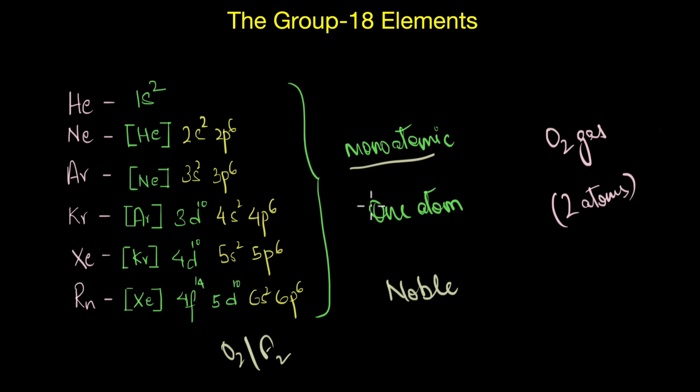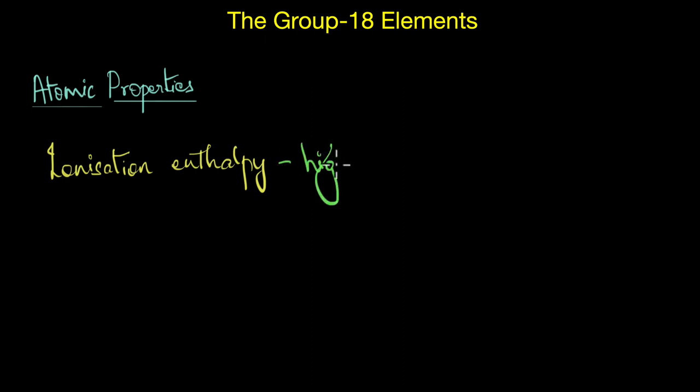Now having completely filled valence shell electronic configuration also affects their atomic properties like ionization enthalpy. For example, these elements exhibit a very high ionization enthalpy, obviously because they have a completely filled octet electronic configuration. NS2 NP6 is their outer electronic configuration, and that means they have very little tendency to lose electrons. Therefore we have to provide a very high amount of energy to disrupt this stable electronic configuration. For the exact same reason, they also have a very large positive electron gain enthalpy.